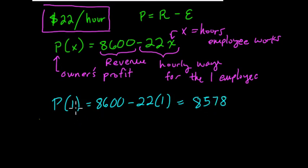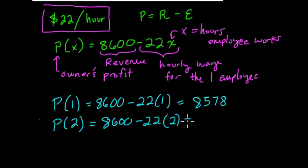If we substitute in 2 for X, we have 8,600 minus 22 times 2, or minus 44, which is 8,556. So here we can see that we're plugging in 2 for X, where you subtract 2 groups of 22.